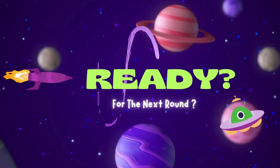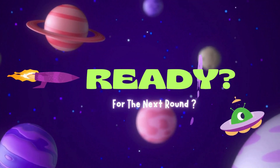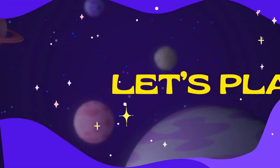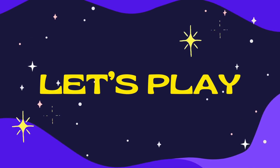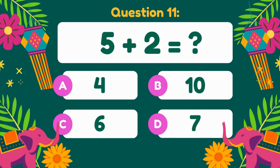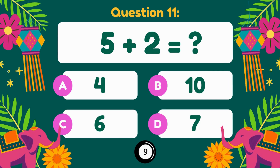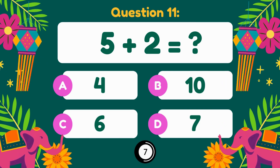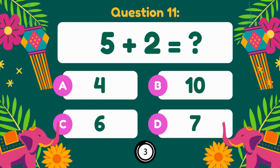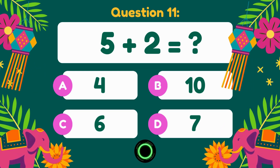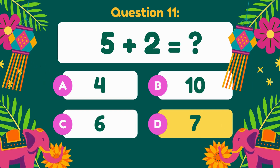5 plus 2 equals. 5 plus 2 is equal to 7.